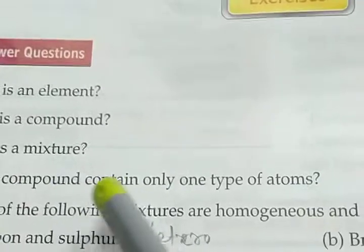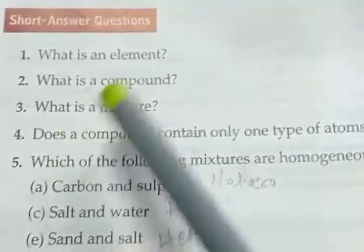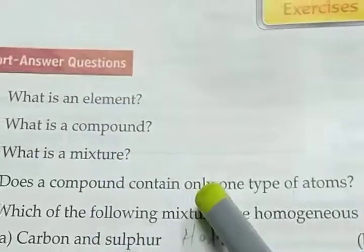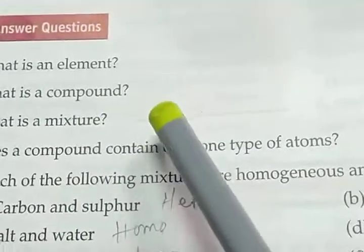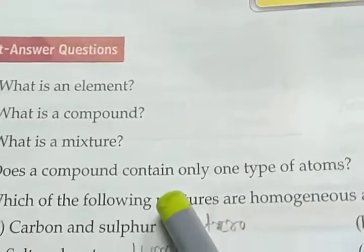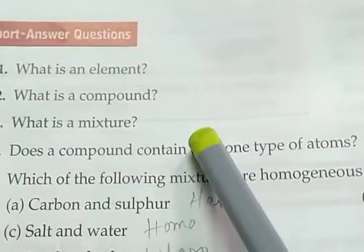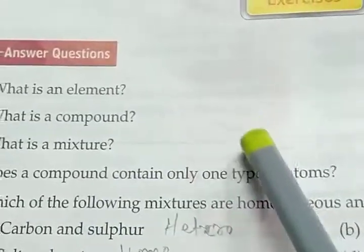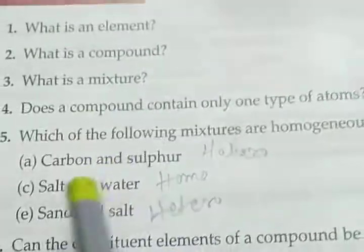Does a compound contain only one type of atom? No, a compound contains different types of atoms, because a compound is formed when more than two or three elements combine together. The atoms are different because different kinds of elements combine to form a compound.